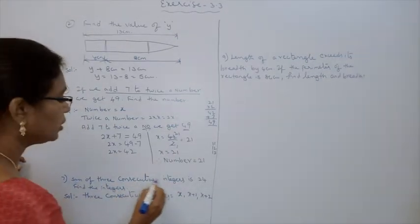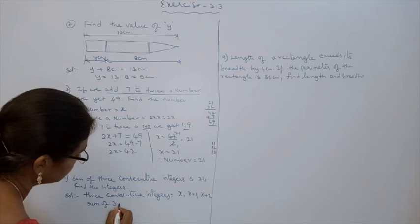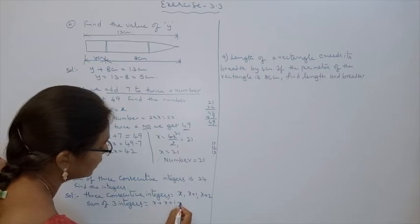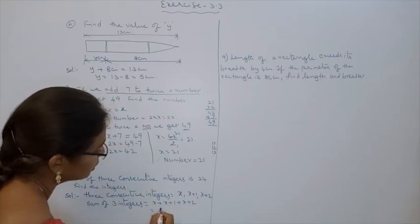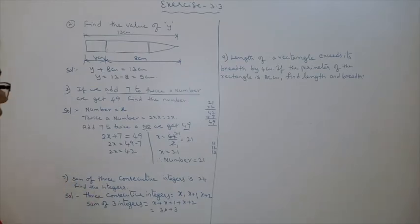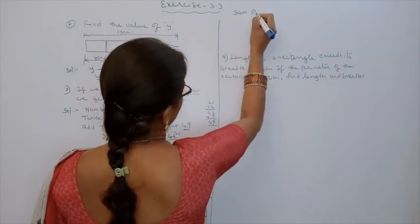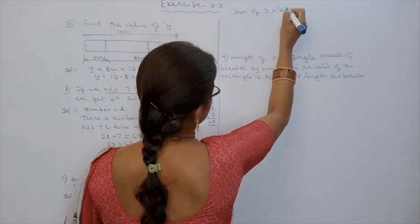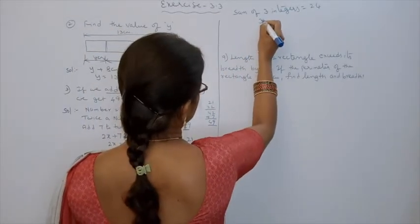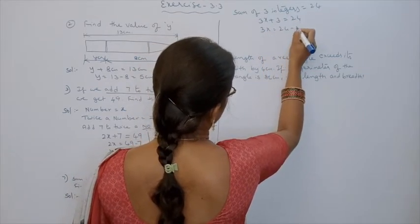Sum of 3 consecutive integers means addition. Sum of 3 integers: x plus (x plus 1) plus (x plus 2) is equal to 3x plus 3. The clue given is: sum of 3 consecutive integers is 24. So 3x plus 3 is equal to 24. Then 3x is equal to 24 minus 3, which is equal to 21.